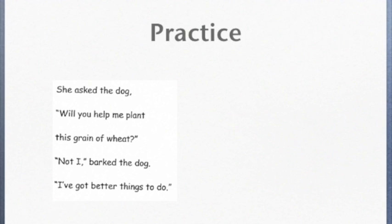Ready to practice on section three? Here we go. She asked the dog, will you help plant this grain of wheat? Not I, barked the dog. I've got things to do. The reader omitted the word, me, and then omitted the word, better. Each counts as an error.